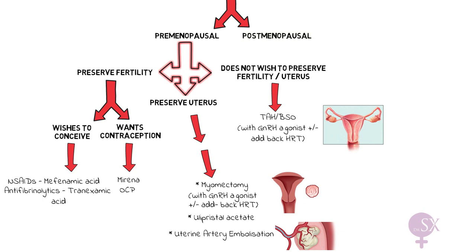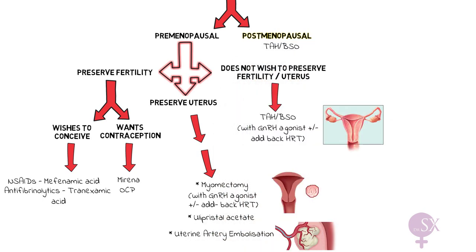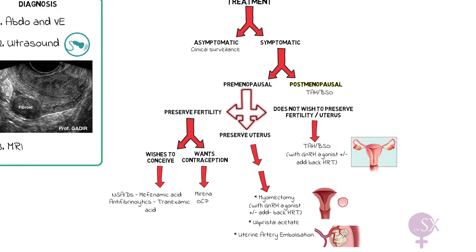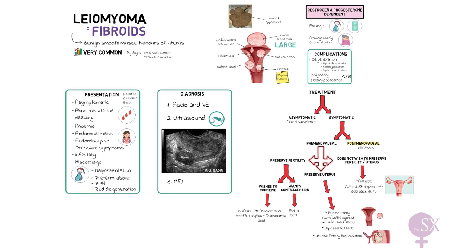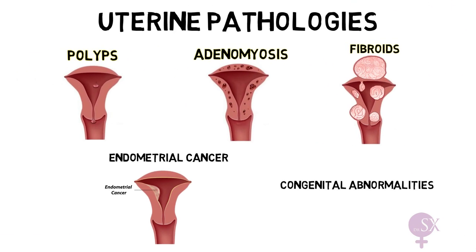For patients who are postmenopausal, we typically opt for a hysterectomy — a total abdominal hysterectomy and bilateral salpingo-oophorectomy. That's all you need to know about fibroids. I hope this video was helpful. In my next video, we shall be discussing endometrial cancer and congenital uterine anomalies. Thank you.